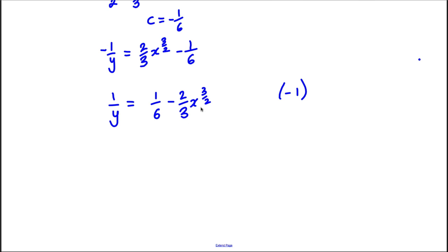Now let's try and combine these. So this is the same as 1/y = 1/6 - 2x^(3/2)/3, same as that.